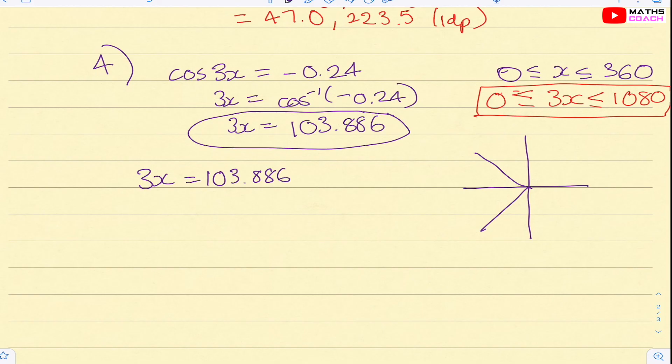So once we've got 3x equals to 103.886, we're going to look in these two quadrants because it will be negative solutions. Also, we need to bear in mind our new interval. So our solutions are 3x. So one of them is 103.886. And then we need to know, well, this is also our acute angle of 76.1 we have here and 76.1 here.